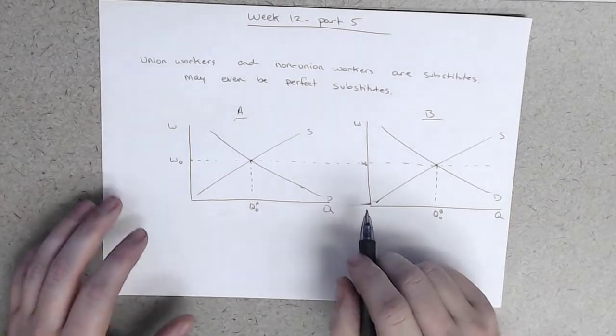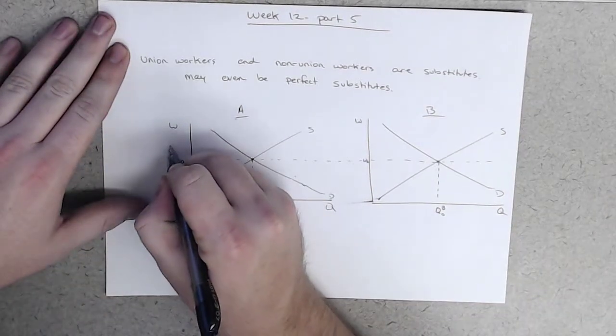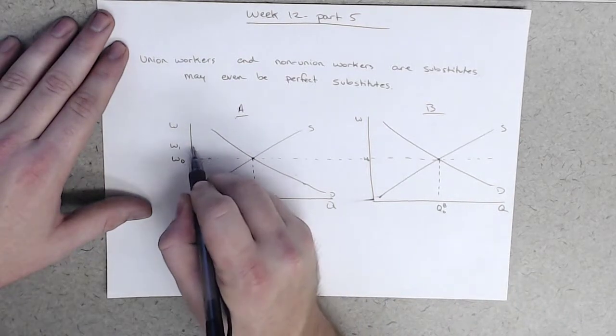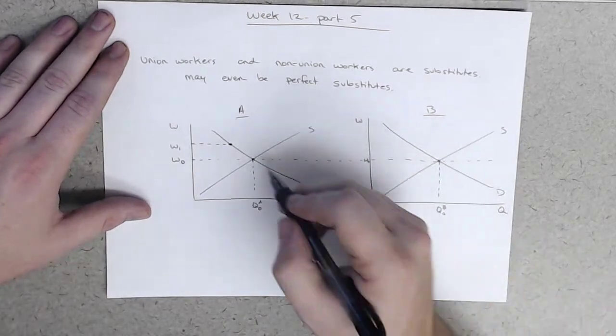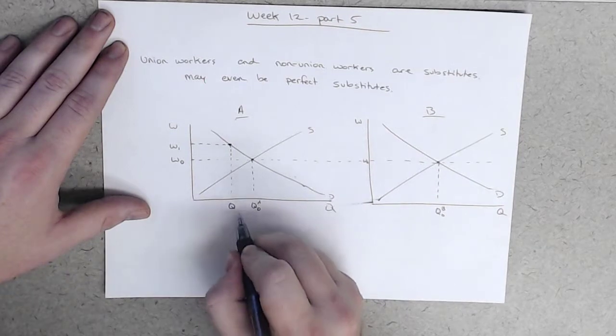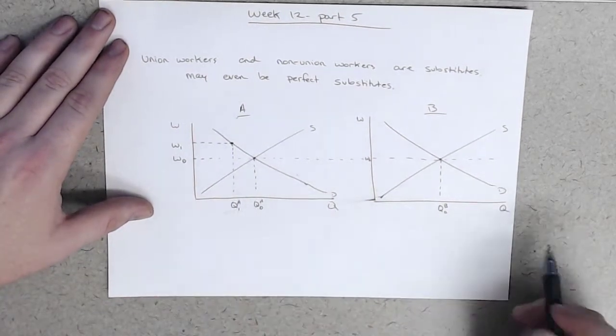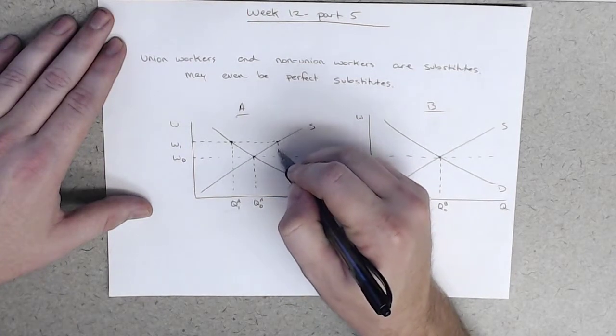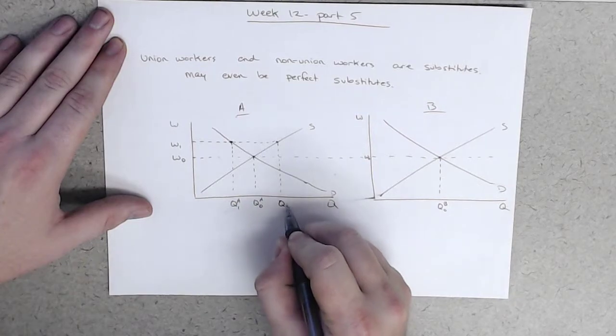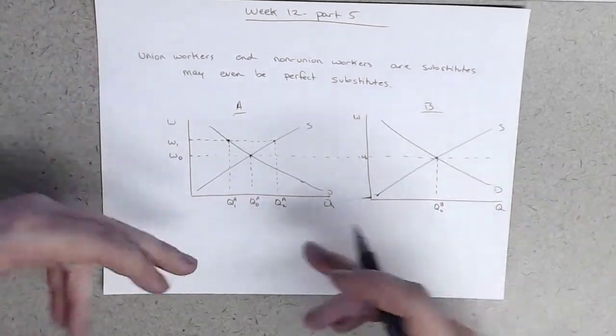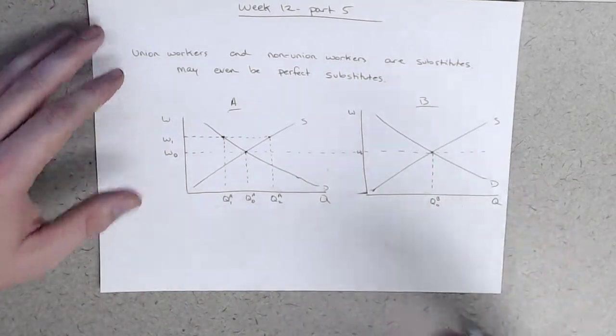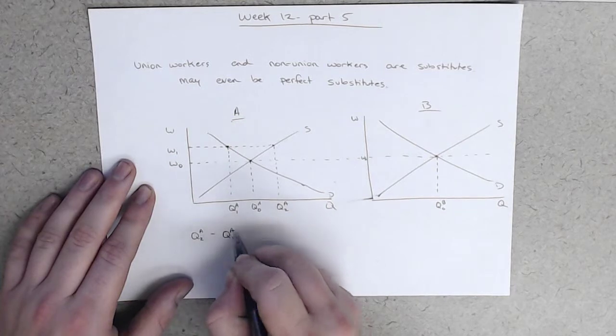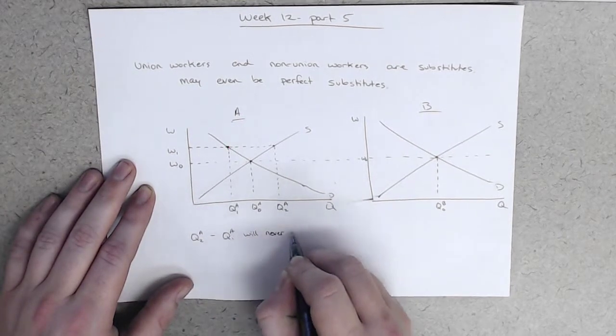Now, let's suppose that this labor market successfully unionizes and secures higher wages, we'll call them W-1. Call them W-1 here, for their workers. And so at W-1, this many workers, Q-1A workers will actually get employed, but Q-2A workers will be looking for work. This is the standard, same exact analysis as the minimum wage. But the difference here is that these workers, so Q-2A minus Q-1A will never find work in A. They're never going to find work. As long as the union's there, they will never ever find work.